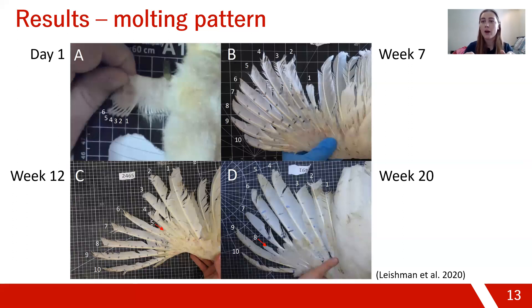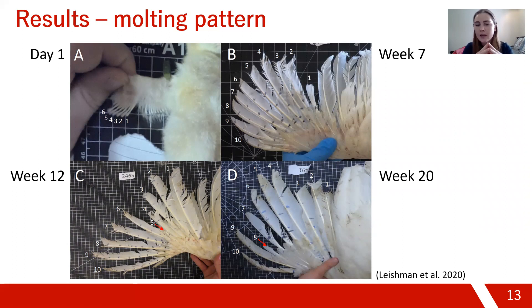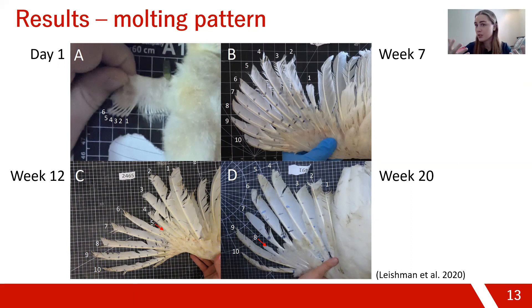In a descending molting pattern, when primary feather 1 grows and is ready to molt, it falls off and the new primary 1 starts to regrow in its place. When the new primary 1 is almost at its final length, primary 2 molts off and begins to regrow, then primary 3, and so on. Only one feather molts at a time — a conserved strategy because birds don't want all these flight feathers molting off simultaneously, as it would impair their wing ability.